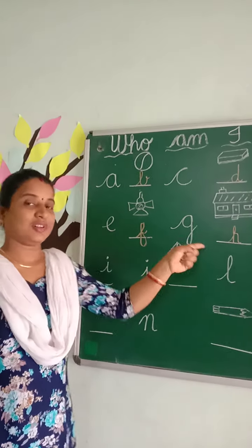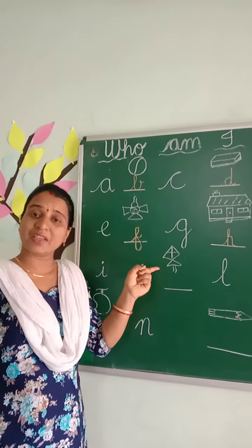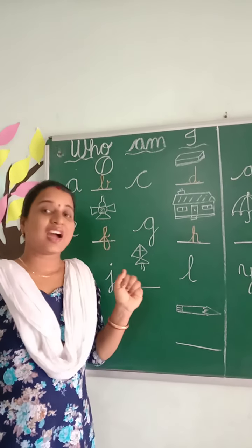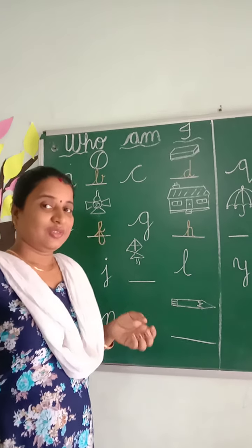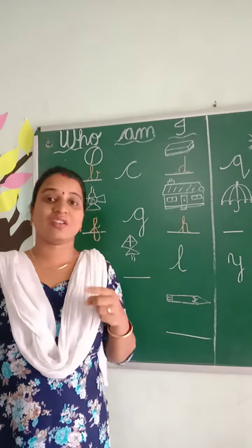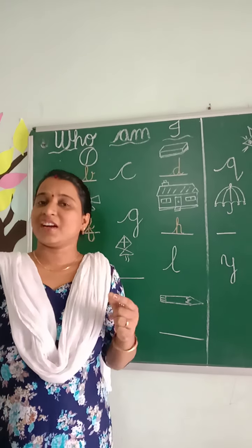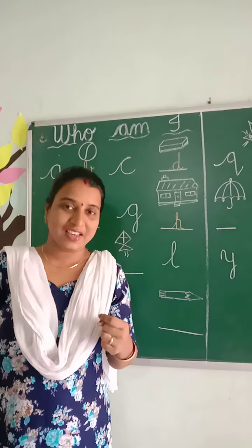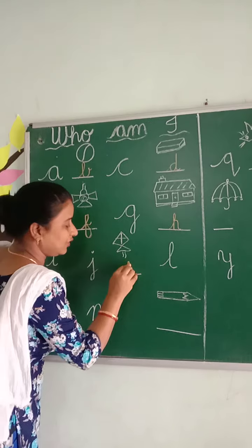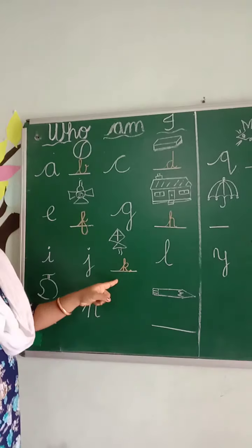H is followed by I, then J. Then again there is a picture for K. Which picture is this? It is a kite. Do you like to fly a kite? We celebrate kite flying on 14th January. Kite starts from which letter? K. K for kite.